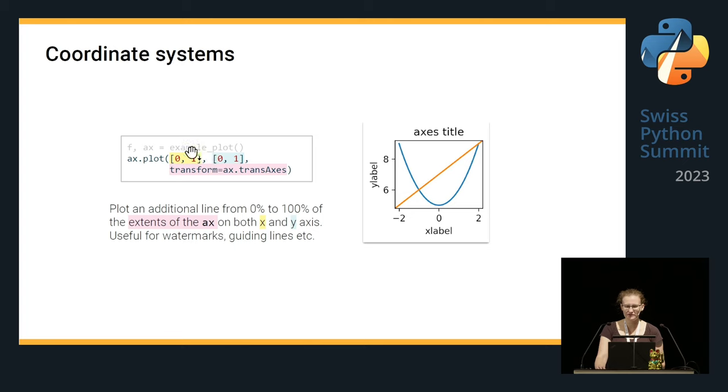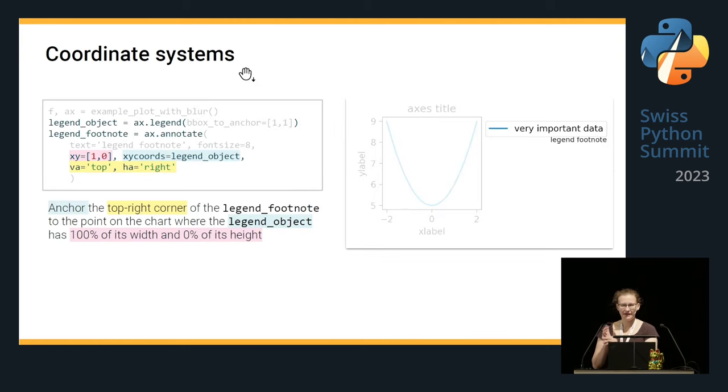Now, I can do something else. I can take my plotting function to use the relative coordinates of the axis. And for example, like this, I can draw a line which goes from 0 to 100% of the axis extent. And here, I do it on each axis. This is super useful for watermarks, for example, or some different kinds of guiding lines. I can also do a different thing. So, let's say I want to place a footnote to my legend. And then I can feed this legend object as my reference point to the function that creates my footnote. And then anchor a corner of one to the corner of the other in a very simple way. Which is also very useful if you need some complex placement.